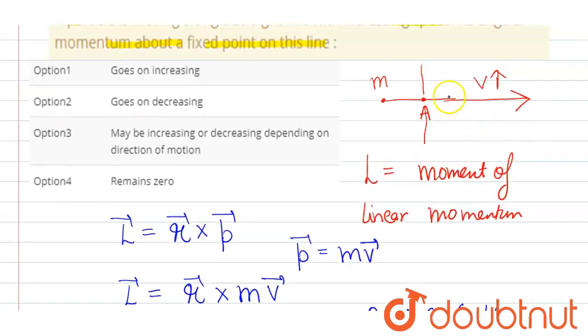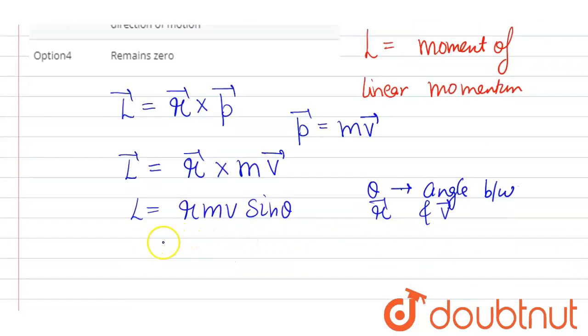So clearly indicating in this diagram, r vector and v vector both are in same direction. That means angle will be 0 degrees. So putting the value here we get L equals r mv sin 0, and sin 0 can be written as 0. So L will be 0.